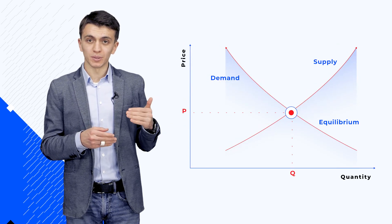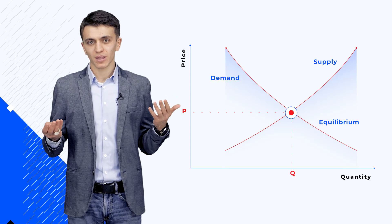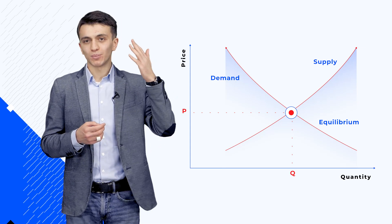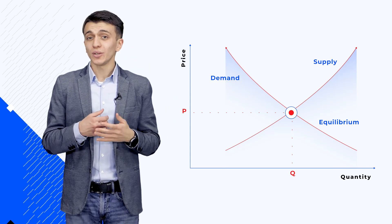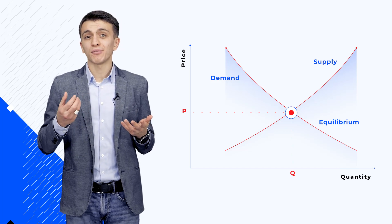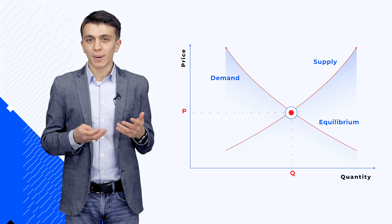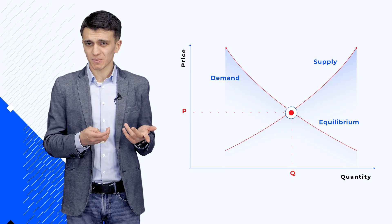Just like everything in the economy, crypto assets have a price determined by the equilibrium between demand and supply — higher demand means a higher asset price. So if you want to make a transaction, you have to pay a fee. But how can you get WAVES tokens to pay those fees?